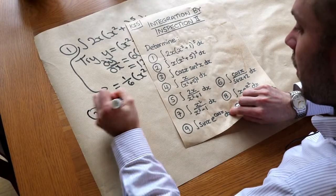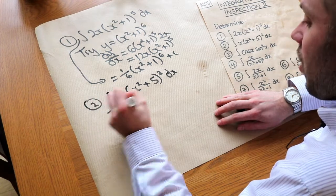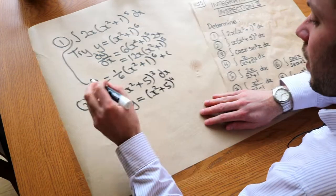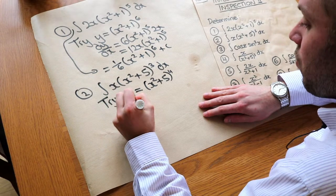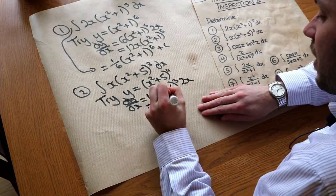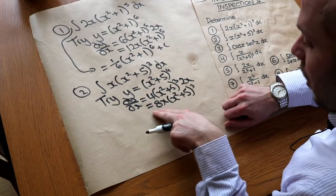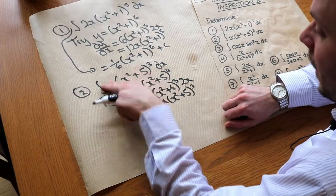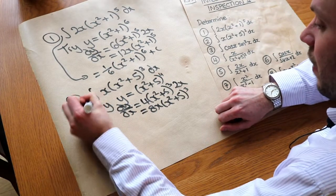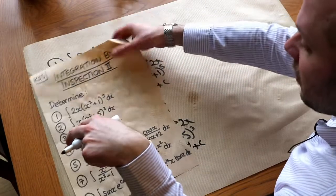Question 2: integrating x(x² + 5) to the power 3. We try y equals (x² + 5) to the power 4. Differentiating by chain rule: 4 blah to the 3, times by the derivative of (x² + 5) which is 2x, giving 8x(x² + 5)³. So that differentiates to this, meaning this integrates to that — but we're integrating something an eighth as big, so the result is 1/8 (x² + 5)^4 plus c.